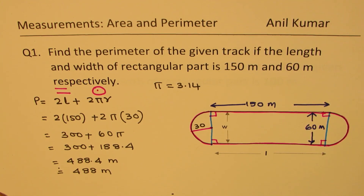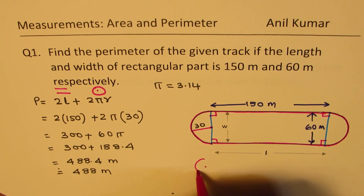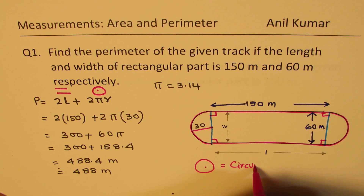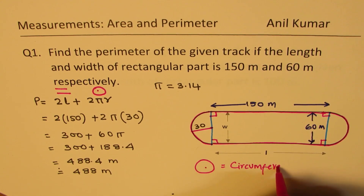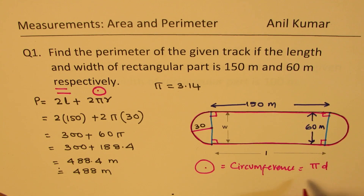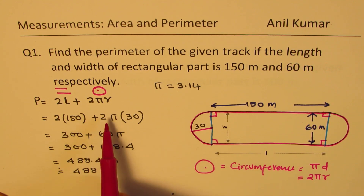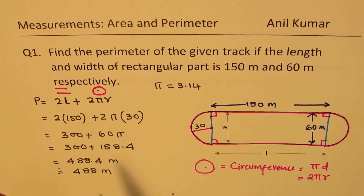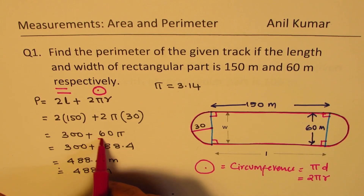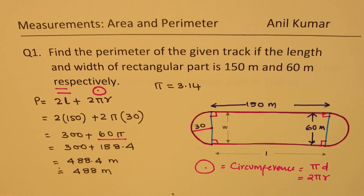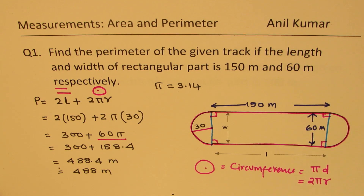Also remember: for a circle, circumference equals π times diameter, or 2 times π times r. We could have also used 60 times π directly, which is the same thing. I hope the concept is clear. Now let us take practice questions based on this concept.